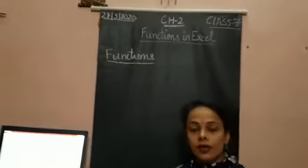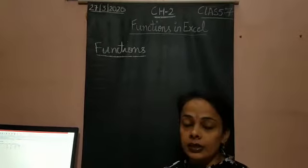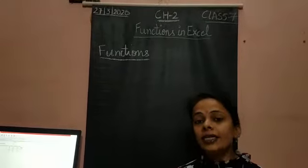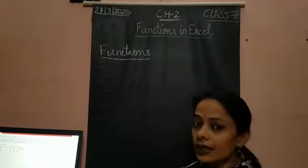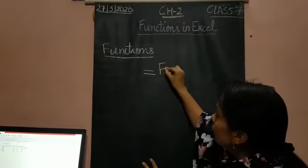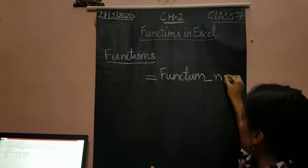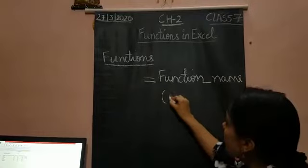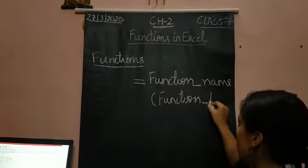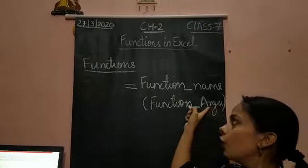Now every function, each and every function, is having different function arguments. So how you are going to write a function? What is the syntax for the function? You will write equals to function name, and in brackets, function arguments. I am writing short form here but you will write the full form.